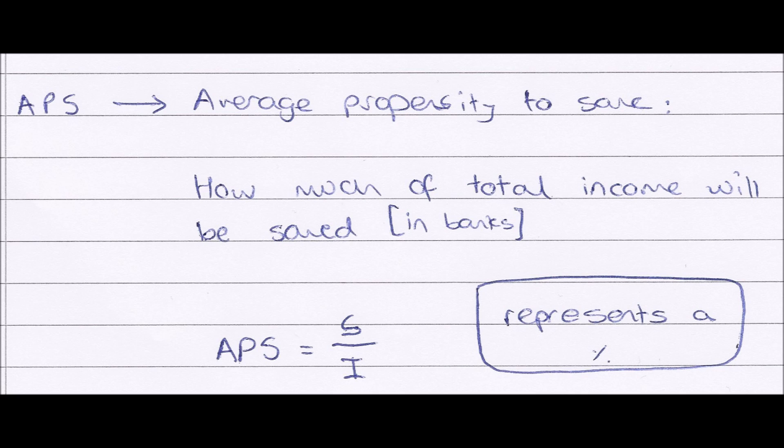Again, we can work this out mathematically using the formula APS equals S divided by I. So APS, average propensity to save, equals S, the total amount of money we are saving, divided by I, income, the total amount of money we're getting in the form of income.